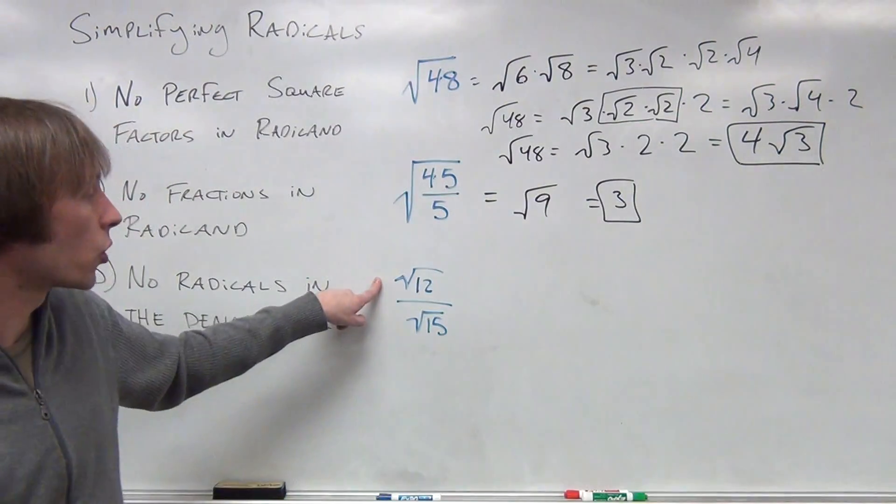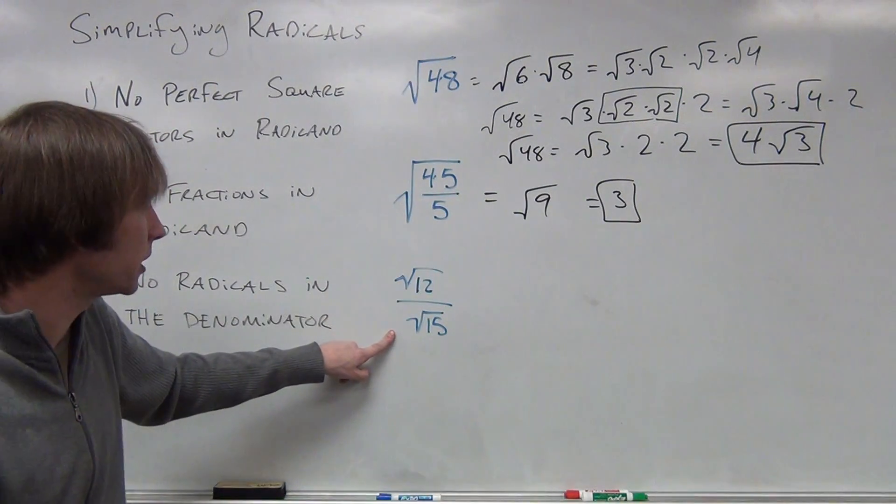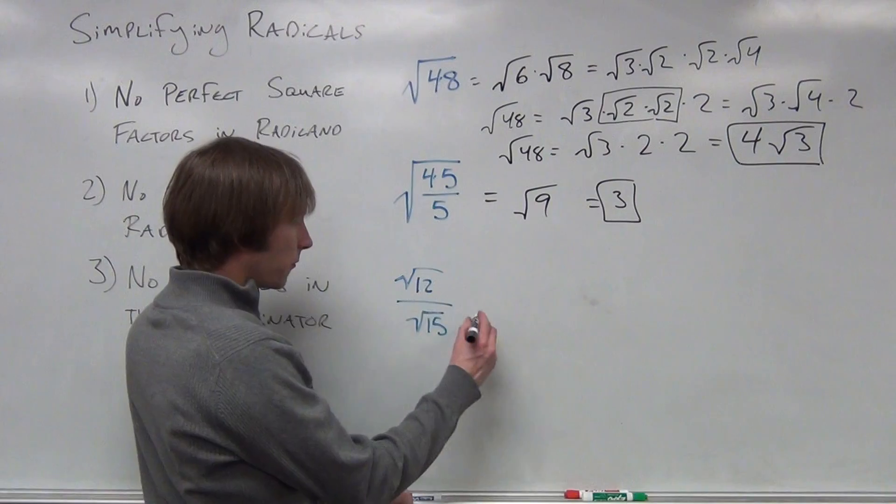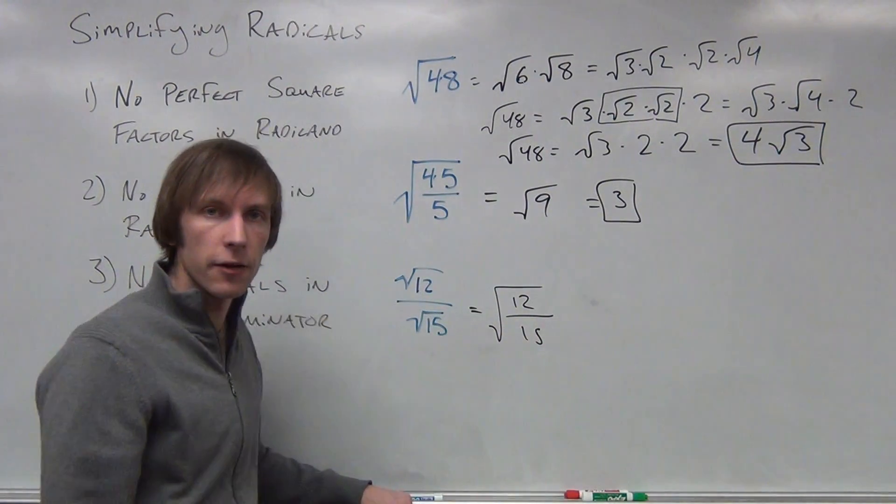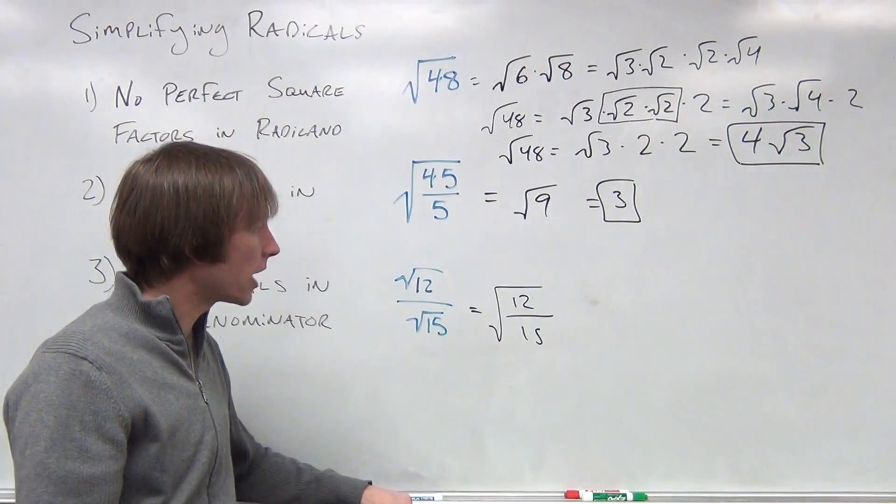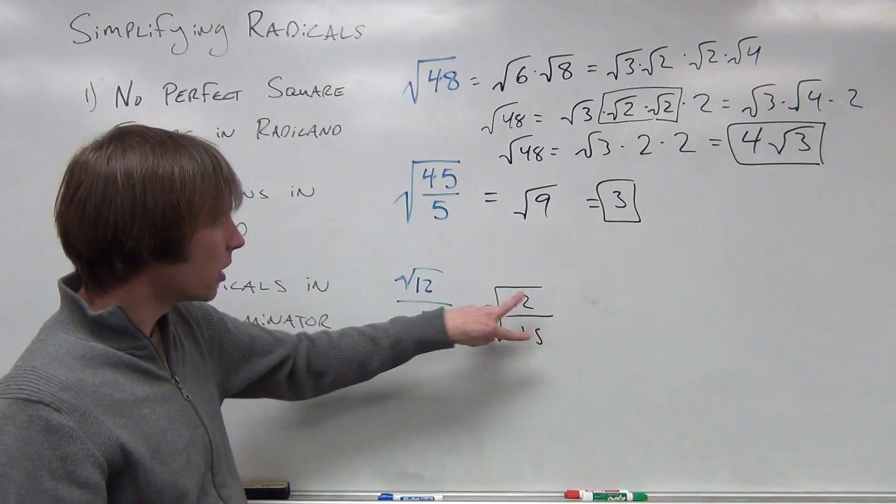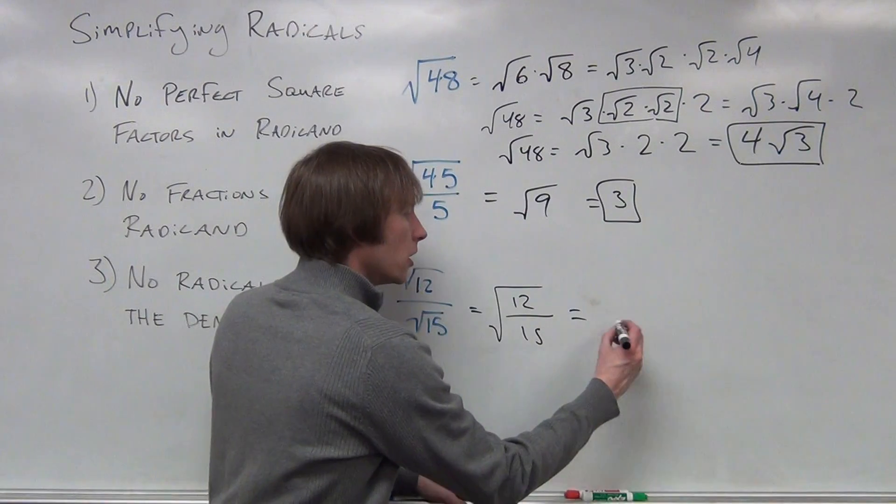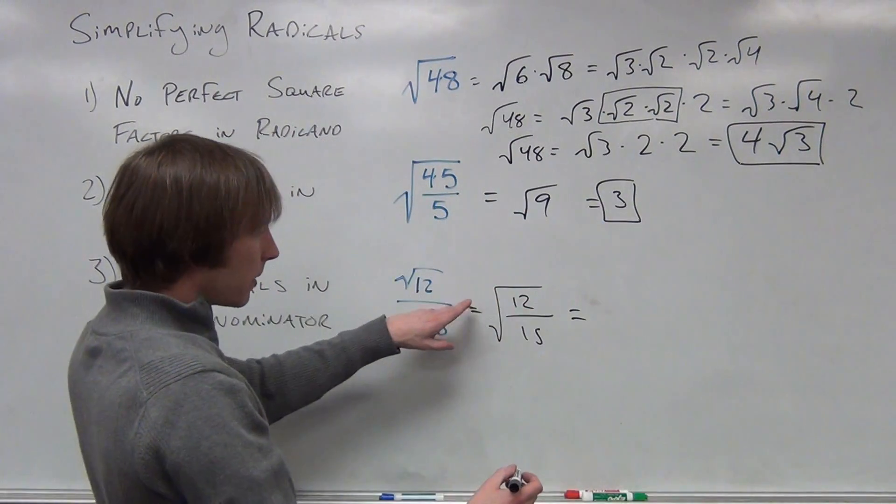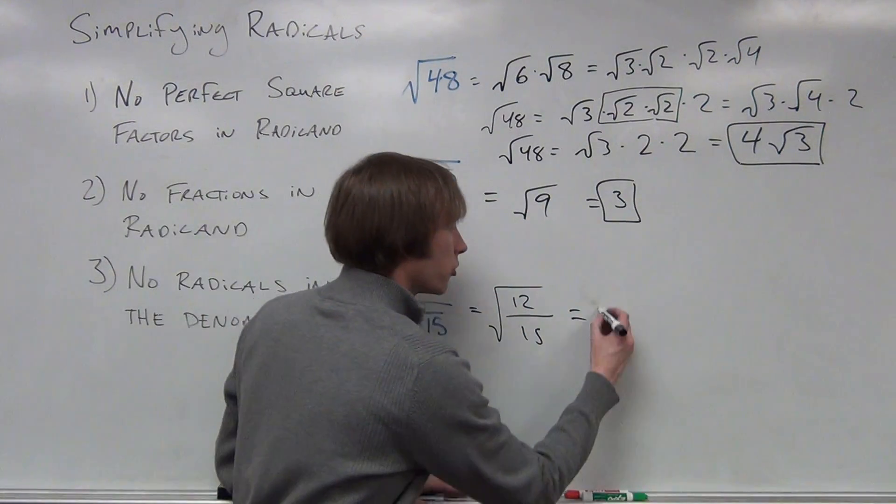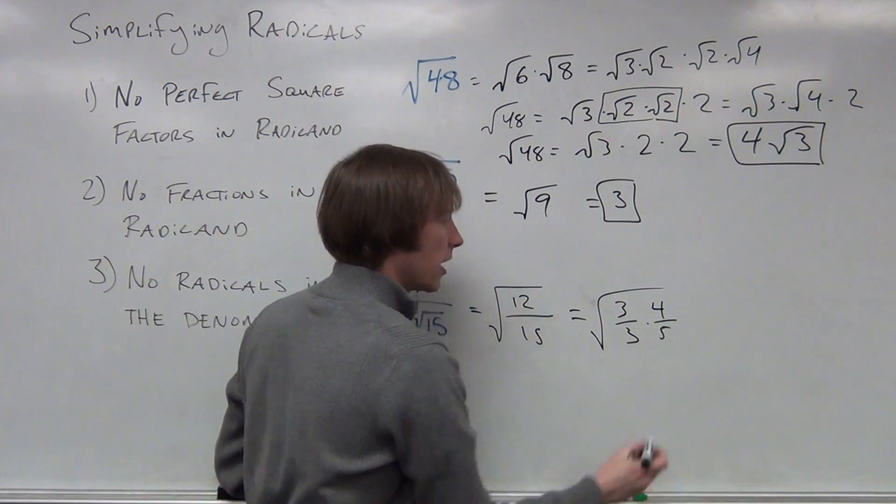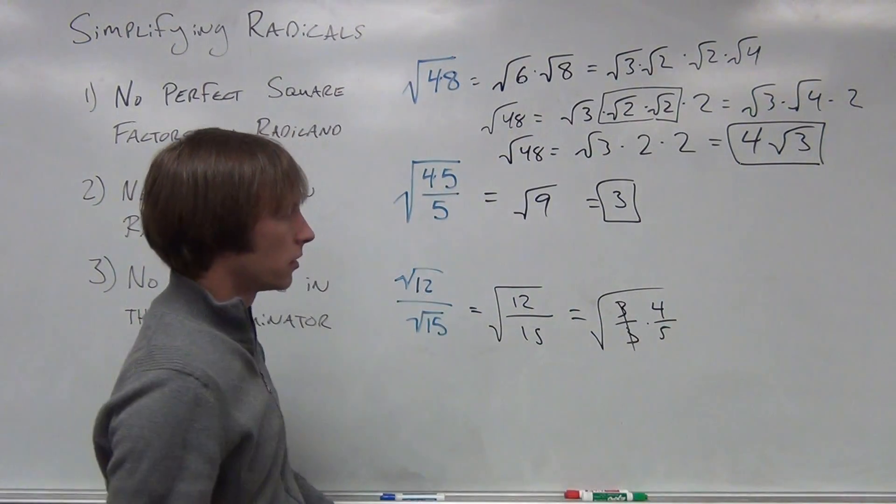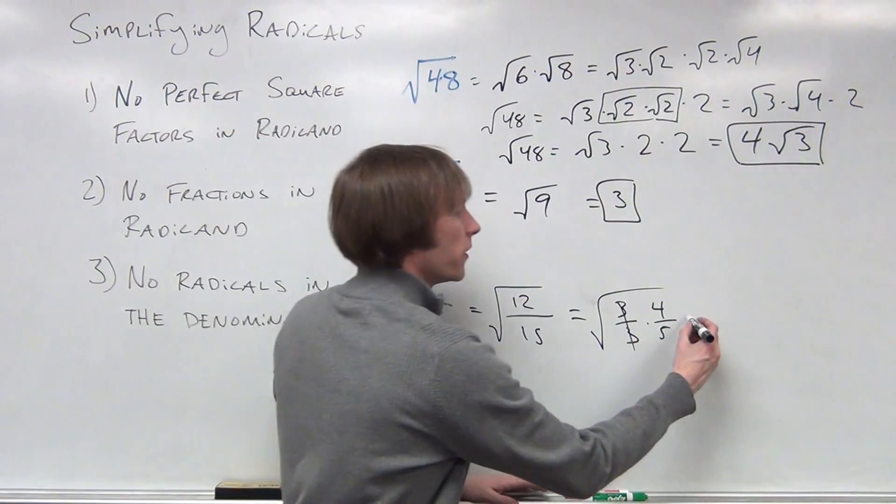Here. The square root of 12 over the square root of 15. Let's see if we can rewrite this as one giant fraction, and if we can simplify what's on the inside. Well, these have a common factor of 3 on top and bottom. So I can divide the numerator by 3, the denominator by 3. That's the square root of 3 over 3 times 4 over 5. Well, this is just 1. So we have the square root of 4 fifths.